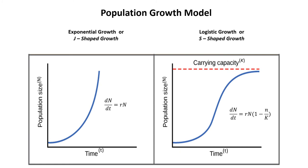Now we look at population growth models. There are two types: the exponential growth model, also called the J-shaped growth curve, and the logistic growth model, also called the S-shaped growth curve.